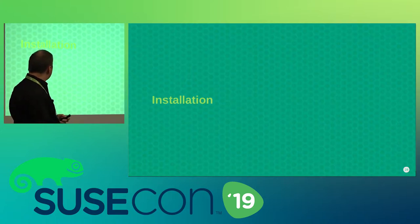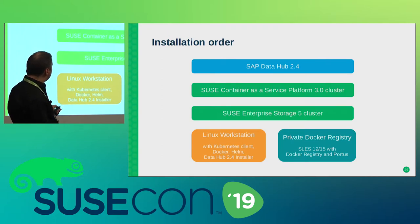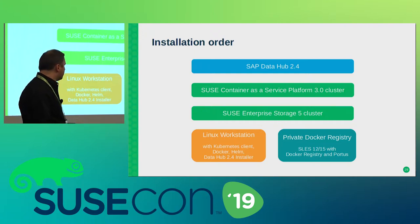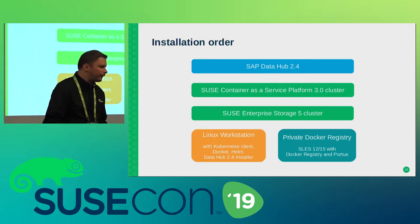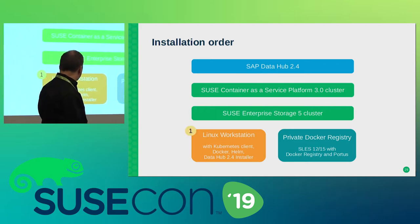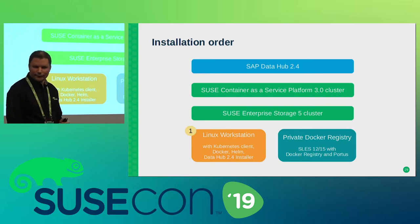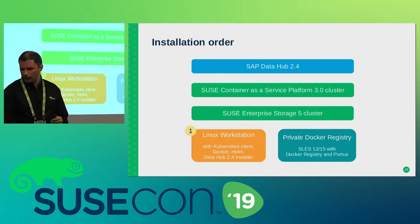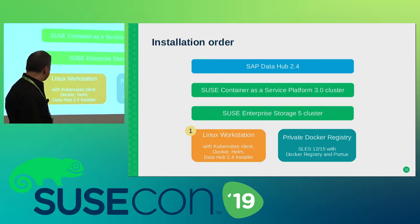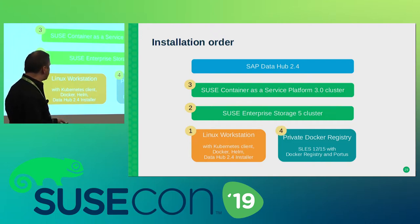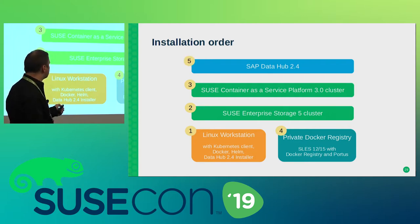Now let's talk about the installation order, because it's important to install everything in the right order. First, install the Linux workstation — you can't install the other things without it, and it has specific requirements. Second, install the Enterprise Storage 5 cluster. Third, install the CASP platform. Fourth, install the private Docker registry. The last step is to install the SAP Data Hub 2.4 Foundation.